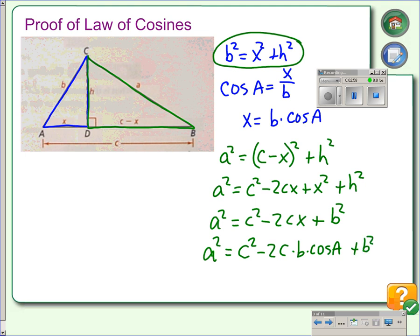Rearranging this formula, we get a squared equals b squared plus c squared minus 2bc times the cosine of A. And that is the law of cosines. So we can use the law of cosines to find any missing side or missing angle in the triangle.